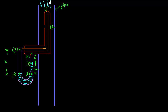From the other tutorial on the Pitot tube, the expression we obtained to determine velocity was Ua equals C — the tube coefficient — times the square root of 2 times the quantity P3 minus P4, divided by rho F, where rho F is the density of the fluid flowing in the pipe.